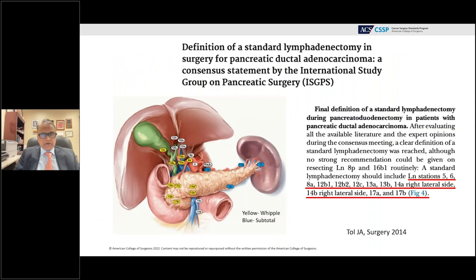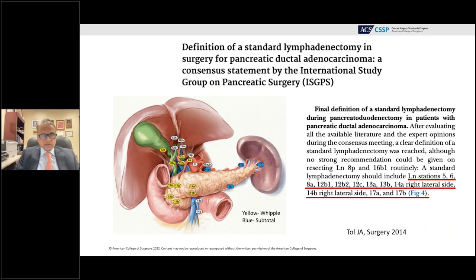The International Study Group for Pancreatic Surgery recommended that a standard lymphadenectomy during a Whipple operation should remove stations 5, 6, 8a, 12b1, 12b2, 12c, 13a, 13b, and the lymph nodes along the right lateral aspect of the SMA — 17a and 17b — as highlighted in the schematic. For a subtotal distal pancreatectomy, stations 9, 10, 11, and 18 should be included.